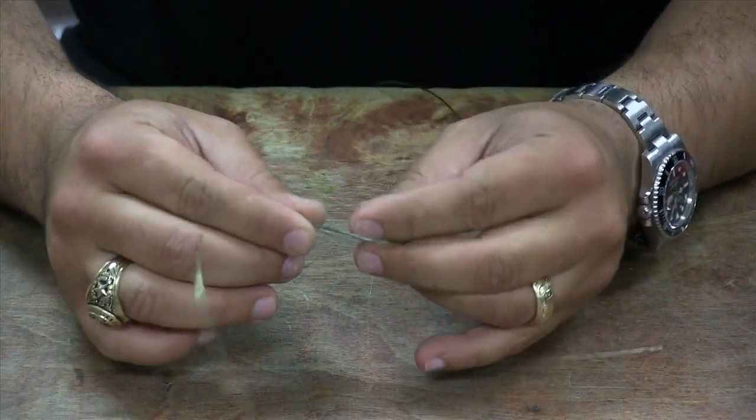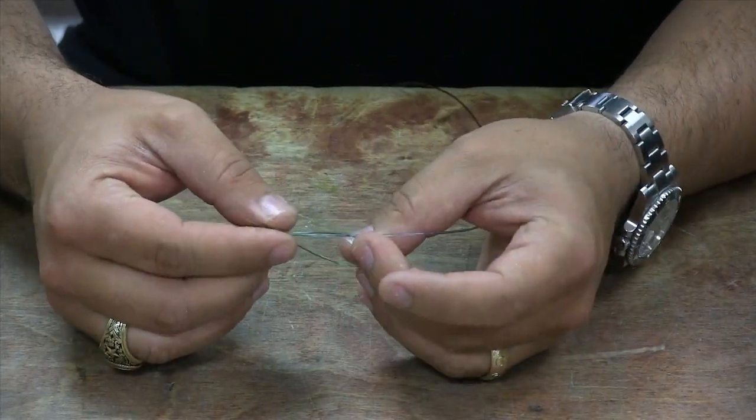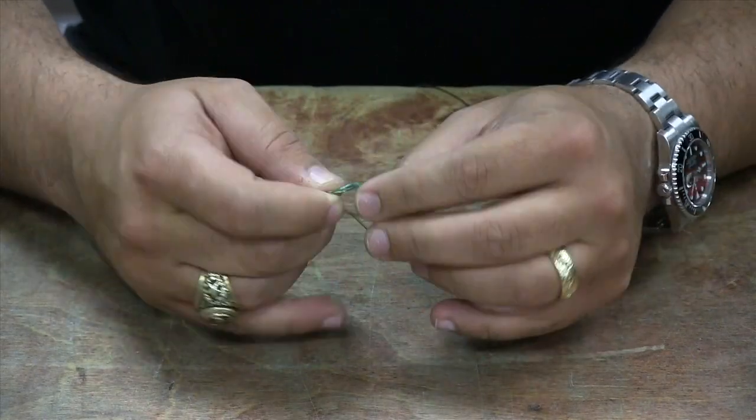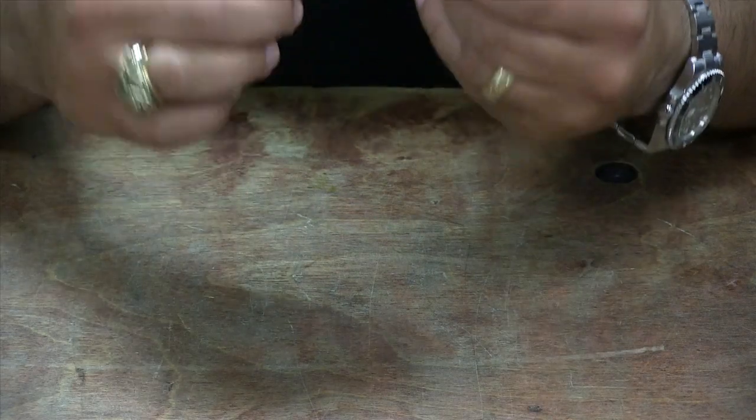We're going to take the rest of the tag, make a loop, and tie a double overhand knot around the loop and the main line. Lubricate that.